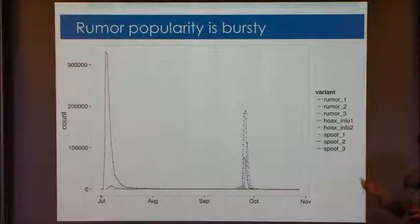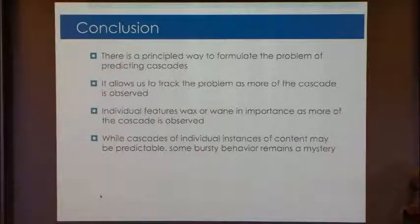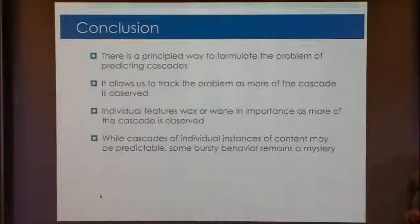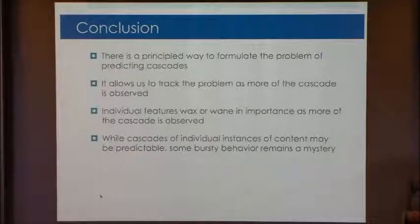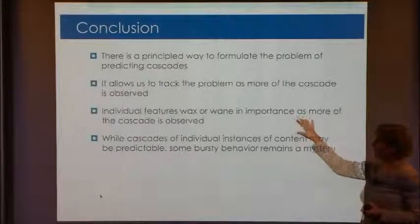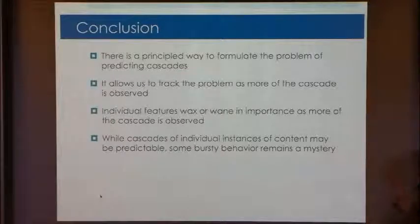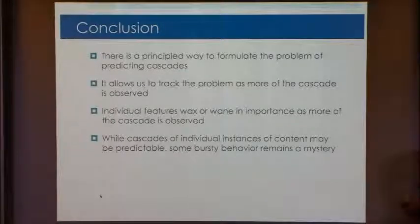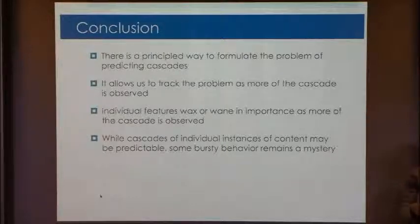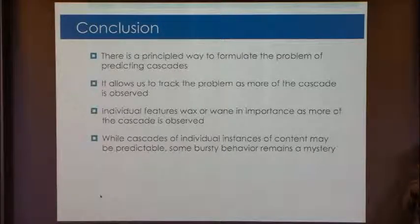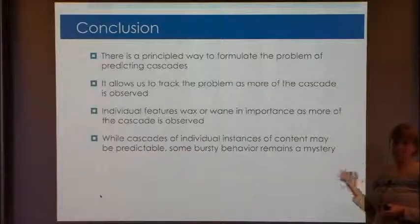So yes, we can predict some cascades. I would say good luck predicting things like this. So to conclude, we think we found a principled way to formulate the problem of predicting cascades in the first place, which is, let's observe it until K reshares and see if it's going to double in size or not. And what we see then is that individual features, which you might like and you might think it's all the content or it's all the original node, et cetera, actually vary as you vary K, the amount of time that you allow yourself to track the cascade. And then finally, all of this kind of addresses if you have an upload and it's fresh and now you've seen the initial steps and you're trying to predict it, but just figuring out where in the network things are going to pop up might be the difficult part. So, thanks.